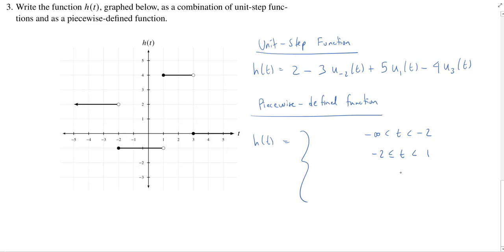Then we go from 1 to 3. So again we include this left endpoint and not the right endpoint. And then finally we're going from 3 to infinity, including the 3 on the left.